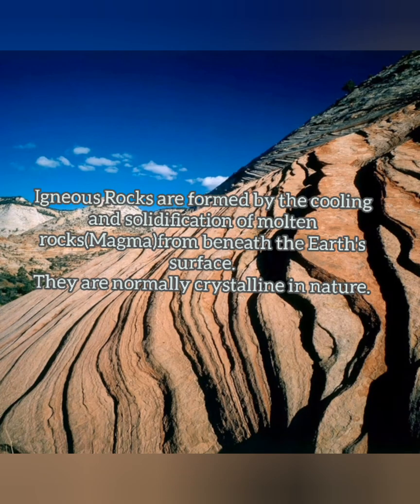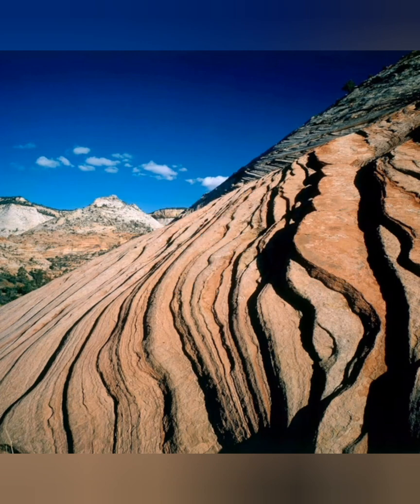Igneous rocks are volcanic rocks. They are made by the cooling and solidification of molten magma which comes out because of volcanic eruption. Igneous rocks are crystalline in nature, meaning they are basically glassy in texture, because they take a long time to cool down and solidify and form.